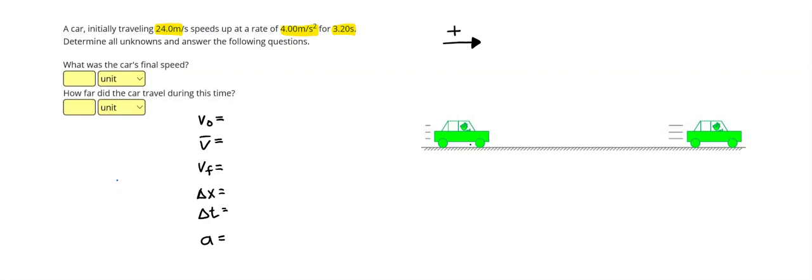So the car's initially traveling 24.0 meters per second, that is our initial velocity. It speeds up at a rate of 4.0 meters per second squared, that is going to be our acceleration, I can tell by those units, for 3.20 seconds.